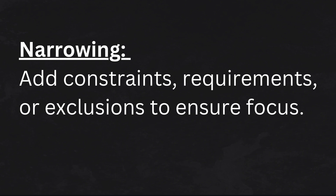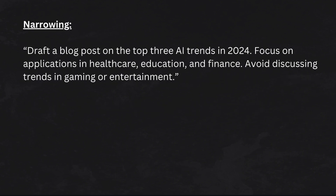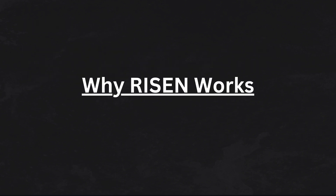And the N stands for Narrowing. AI models are great at pulling in information from all over, but sometimes you need them to focus. Use narrowing to exclude irrelevant information. For instance: 'draft a blog post on the top three AI trends in 2024, focus on applications in healthcare, education, and finance, avoid discussing trends in gaming or entertainment.' Narrowing saves you from irrelevant results and ensures your output aligns with your goals. Why does RISEN work? It eliminates guesswork, giving you results that are closer to your vision from the start.